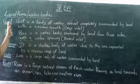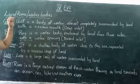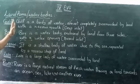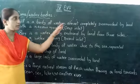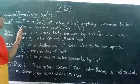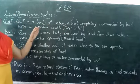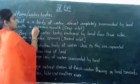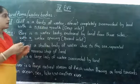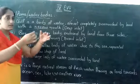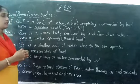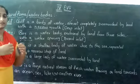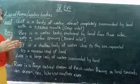Gulf is a water body — it is not a landform. Gulf is a body of water almost completely surrounded by land with a narrow mouth. The inlet of the gulf is very narrow; it is not wider.